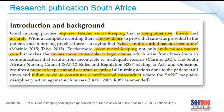Poor record keeping not only undermines patient care but makes the nurse more vulnerable to legal claims. The South African Nursing Council regulation R387 relates to acts of omissions and requires a nurse to keep clear and accurate records of all nursing actions done to the patient at all times. Failure to do so constitutes professional misconduct and the SANC can take disciplinary action. Every piece of evidence we document in the CSSD is patient information and hospital records — it is critical that we keep these records correctly and accurately.